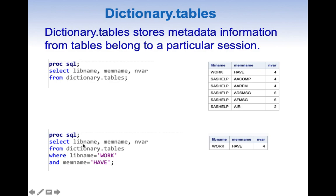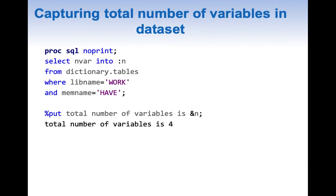If you want metadata information about any particular table, all you need to do is add a WHERE clause. Here we want information about a WORK table named 'have', so we add WHERE libname equal to 'work' and memname equal to 'have'. It gives information about that particular table, returning the libname, memname, and nvar.